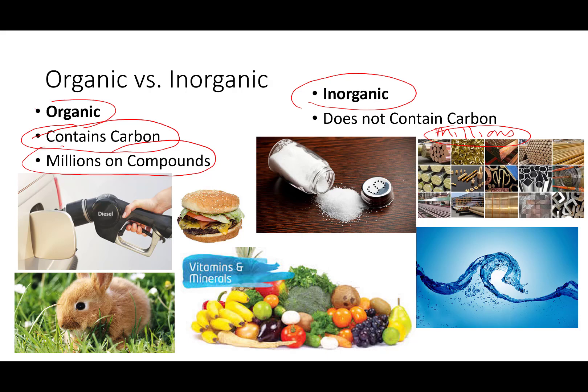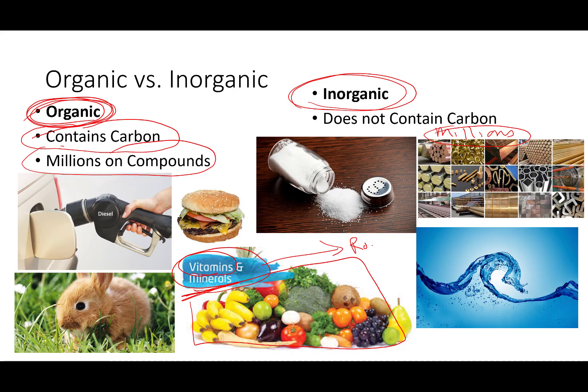One final example of the difference between organic versus inorganic: some of you take a vitamin and mineral supplement daily. Your vitamins are big, fat organic molecules that you can only get from plants. The minerals are things that come from rocks — salts that come from the Earth that you need. So when you take a vitamin and mineral supplement, you are getting some of both, because the human body needs both. All right, that will do for this time. We will see you later. Bye-bye.